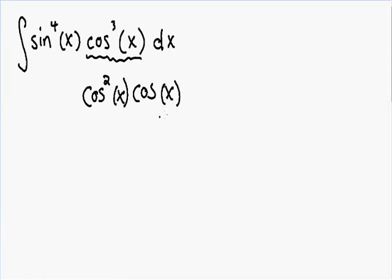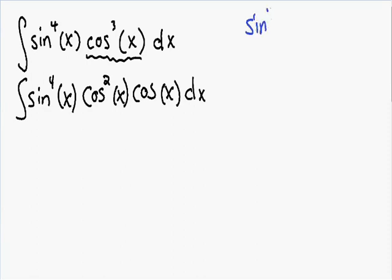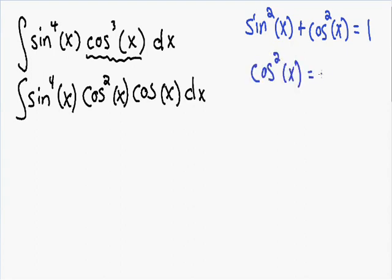We separated and took 1 cosine away, and the rest of the integral stays the same — we have our dx and our sine to the 4th of x. After separating the cosine, this is where we need to use our trig identities. The most common one is sine squared of x plus cosine squared of x equals 1, and if we subtract sine squared of x from both sides, we get cosine squared of x equals 1 minus sine squared of x.